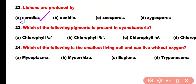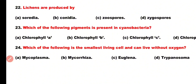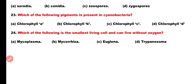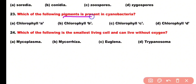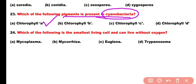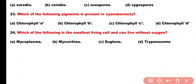Question number 23: Which pigment is present in cyanobacteria? Options: chlorophyll a, chlorophyll b, chlorophyll c, or chlorophyll d. Correct answer is option A. Chlorophyll a, which is a green pigment, is present in cyanobacteria. Question number 24: Which of the following is the smallest living cell and can live without oxygen?